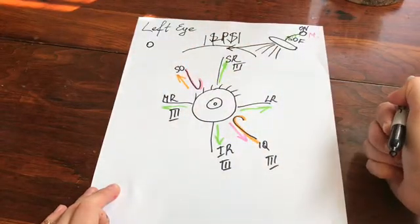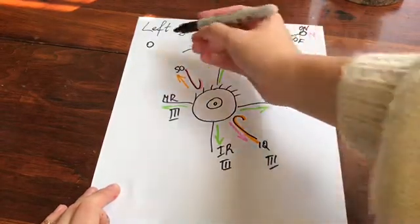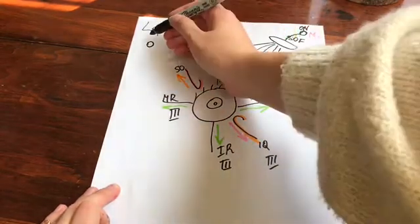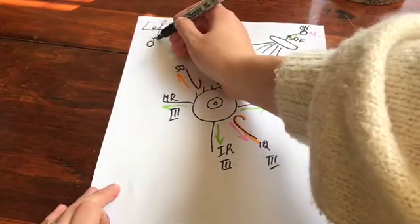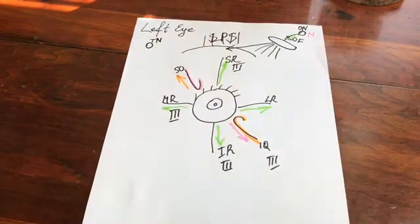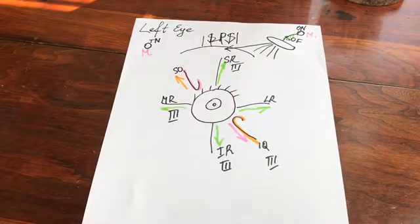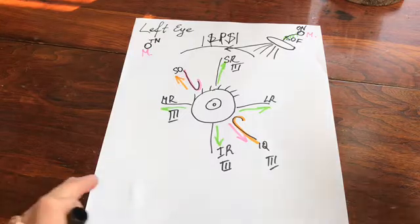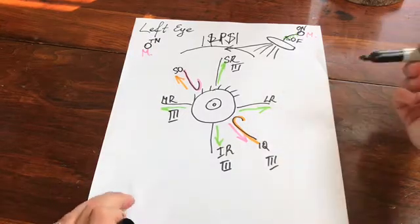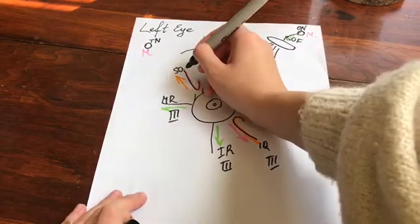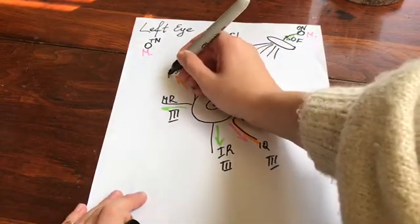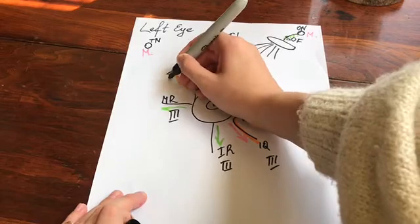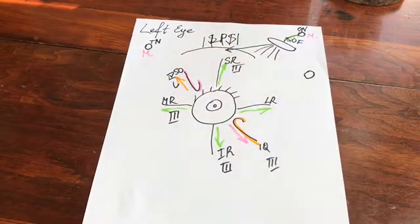The next nerve is the fourth cranial nerve, which is the trochlear nerve. It originates in the midbrain with the trochlear nucleus, and has one motor function. The trochlear nerve exits the skull through the superior orbital fissure and innervates the superior oblique muscle.